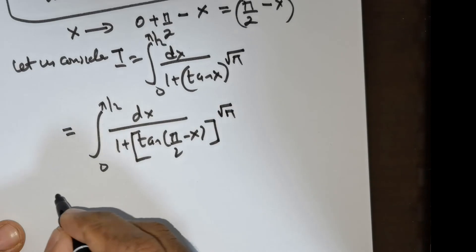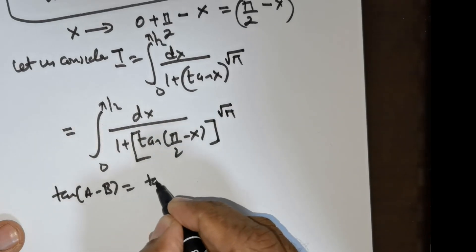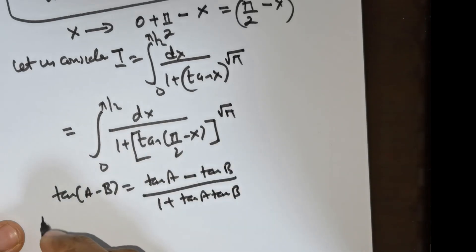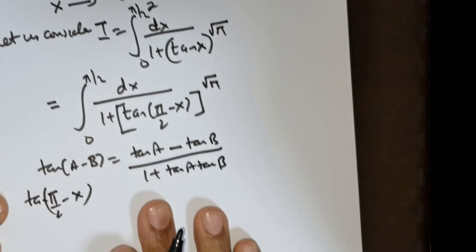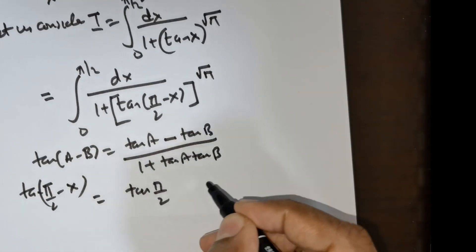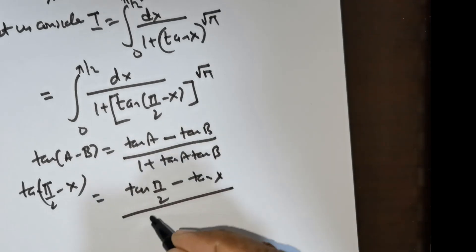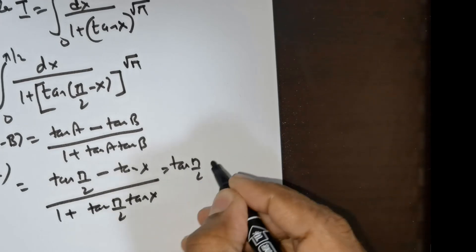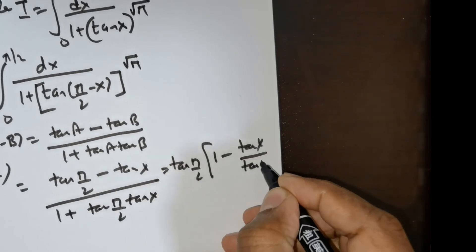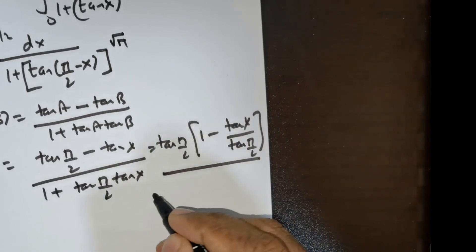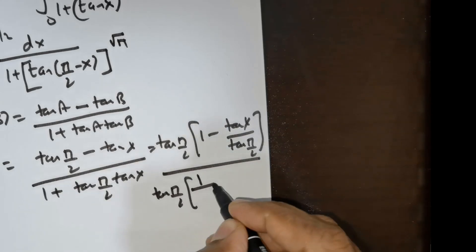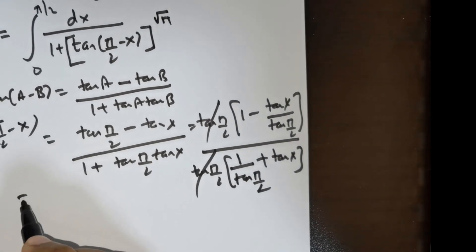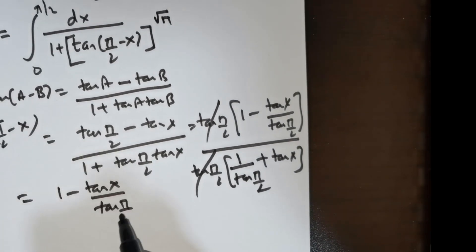Now we need to know what tan(π/2 − x) is. There is a formula: tan(a − b) = (tan a − tan b) / (1 + tan a · tan b). We are expected to find tan(π/2 − x), so this is going to be (tan(π/2) − tan x) / (1 + tan(π/2) · tan x). Now we take tan(π/2) outside, giving us (1 − tan x / tan(π/2)) / (1 / tan(π/2) + tan x).